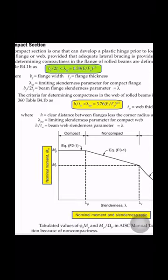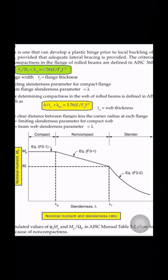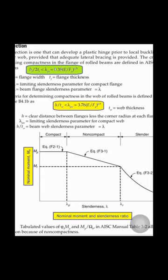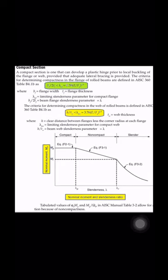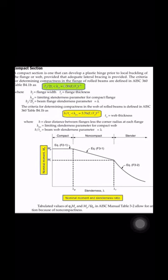If the slenderness ratio is less than lambda p, then the nominal moment will be equal to the plastic moment for the compact section. For non-compact and slender sections, it will become less than the Mp value.